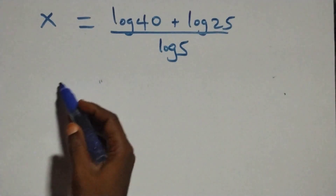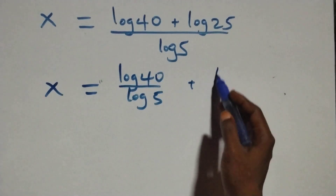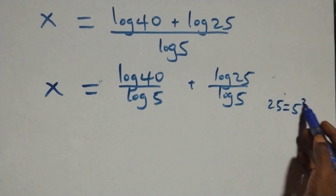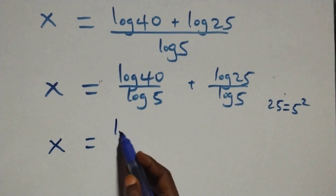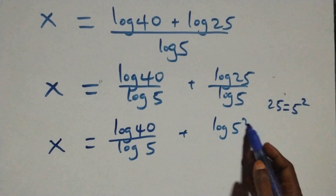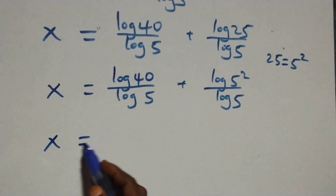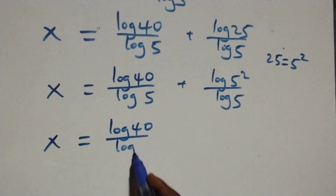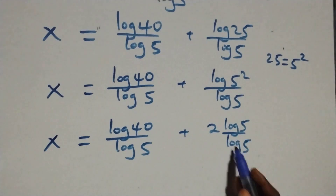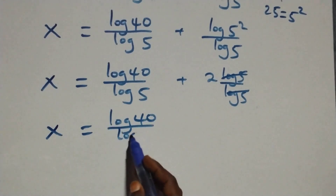We separate this into two fractions: x equals log forty over log five plus log twenty-five over log five. Since twenty-five is five squared, we have log five squared over log five. Applying the power rule, this becomes two log five over log five, and log five cancels, giving plus two. So x equals log forty over log five plus two.